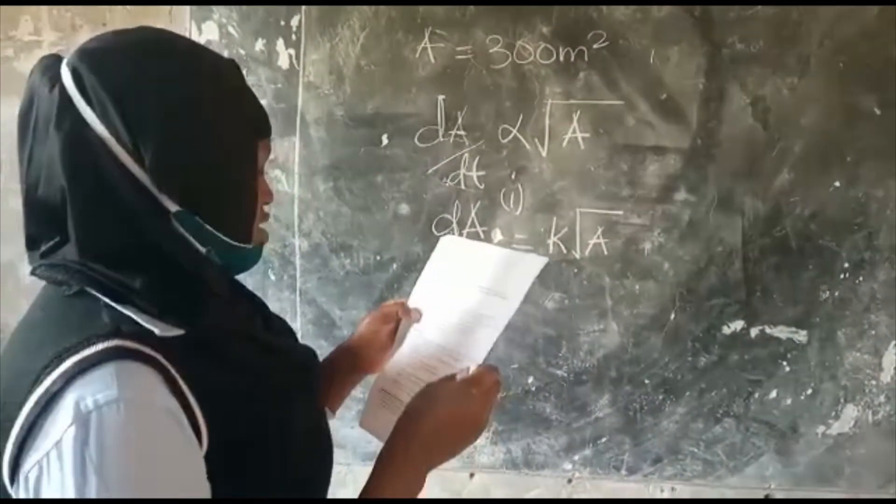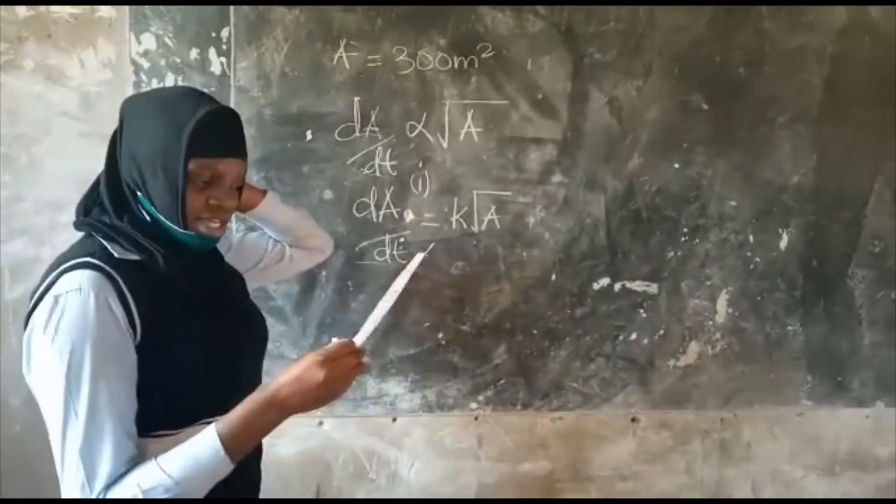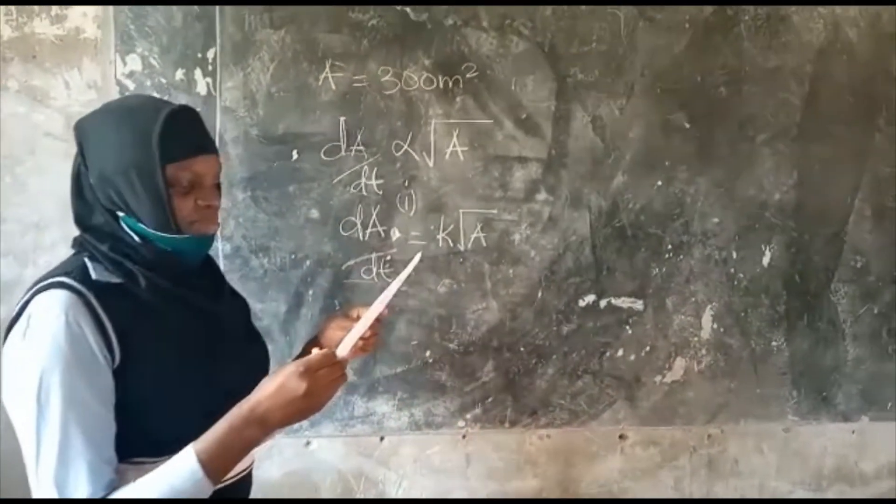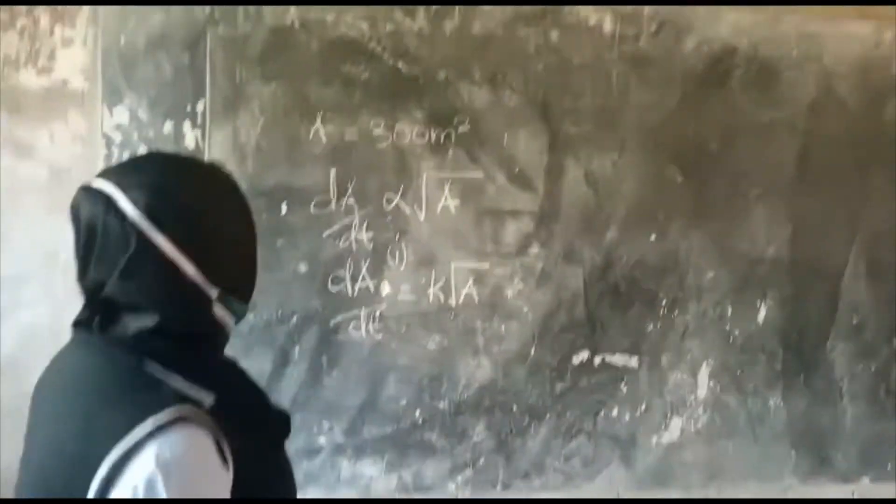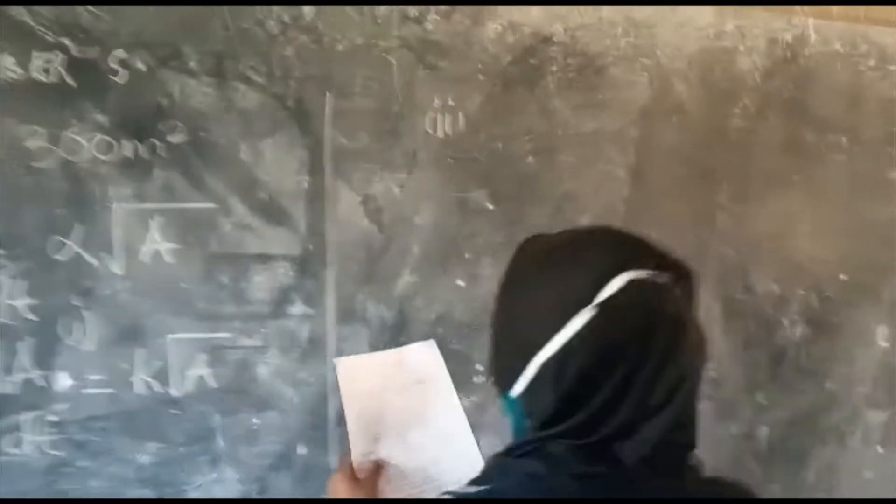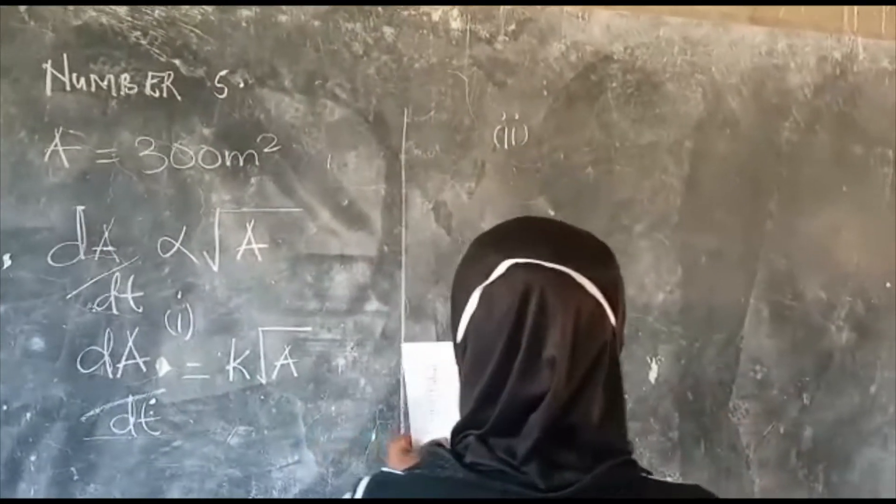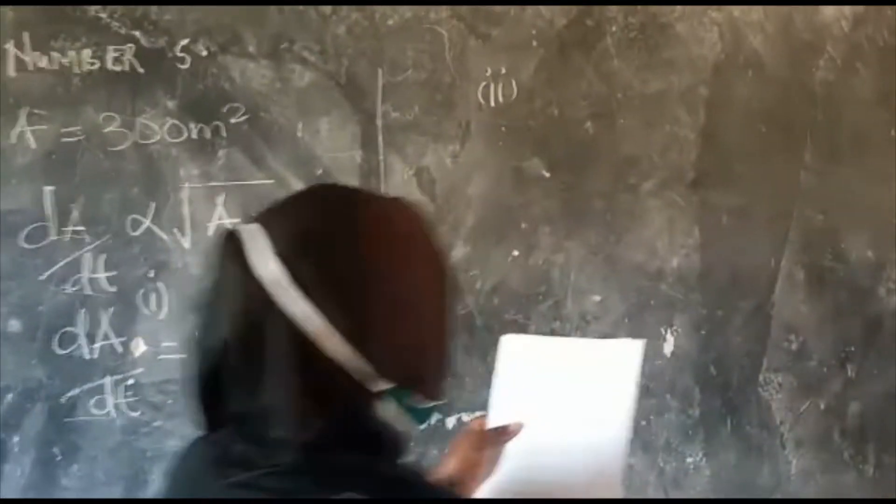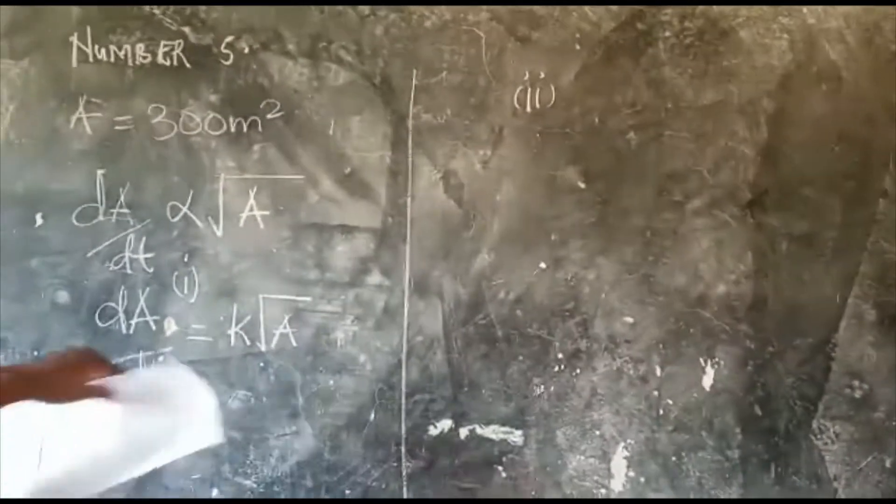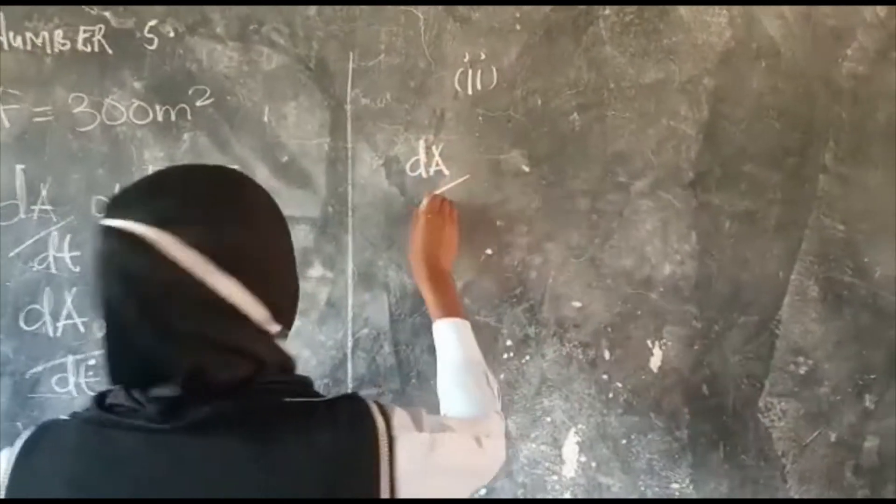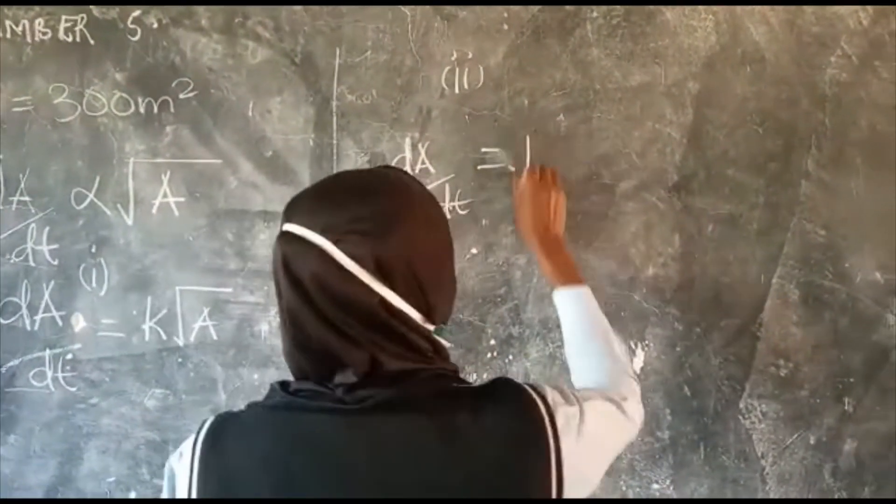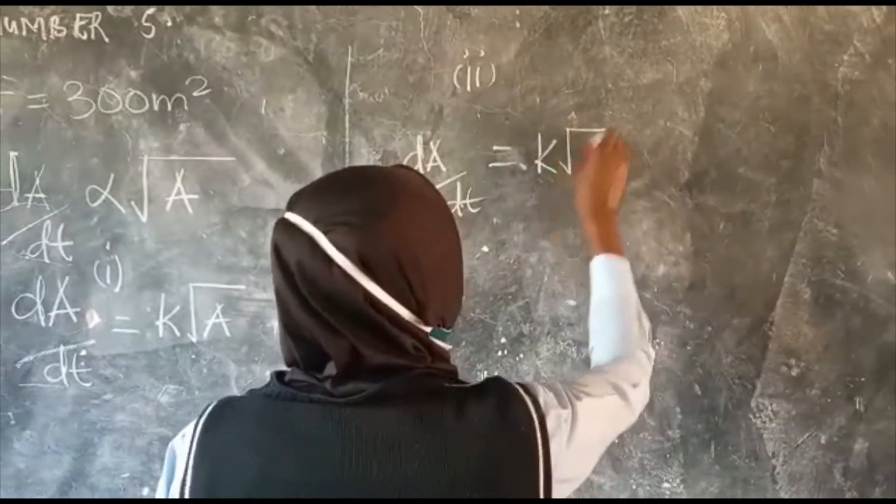Part one says that deduce to the nearest day the time taken for the pond's surface area to be completely covered by the weed. So I am going to start from here. dA over root of A is equal to K dT.